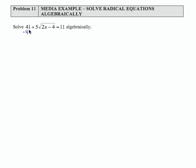I'm going to start by subtracting 41 from both sides of the equation. That gives me 5 times the square root of 2x minus 4 equals negative 30.